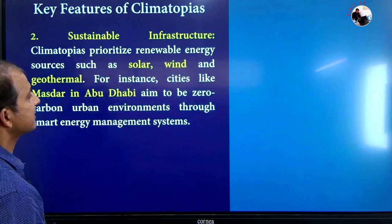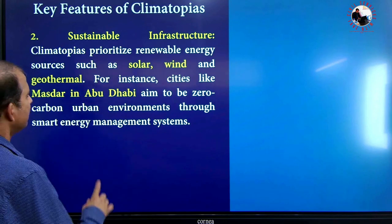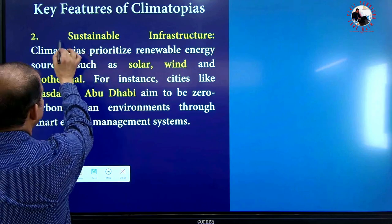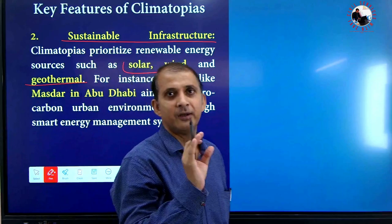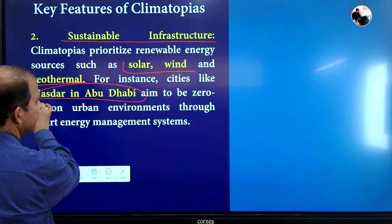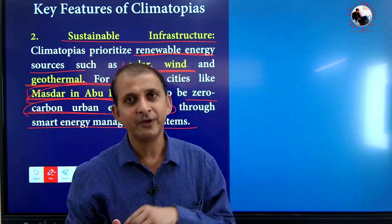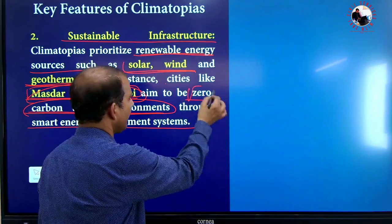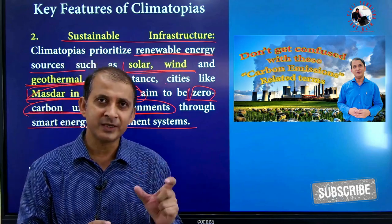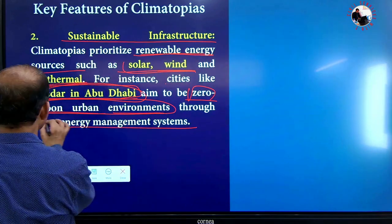Another key feature is sustainable infrastructure. You build infrastructure that uses only solar, wind, and geothermal energy — no fossil fuels, only green fuels. One example is Masdar City in Abu Dhabi, UAE — a zero carbon environment city with zero emissions. If you want to know more about the difference between zero emission and net zero, you can watch a related video on our channel.